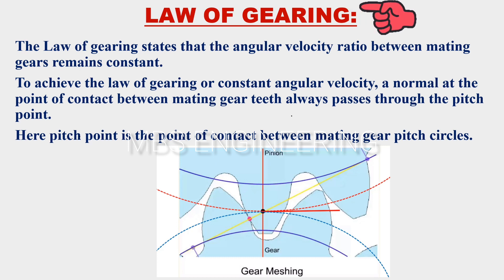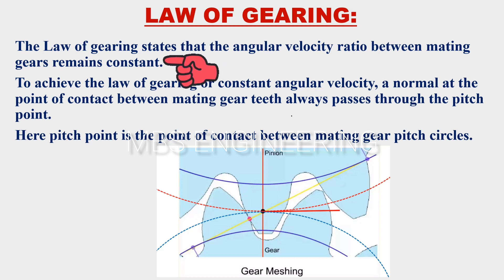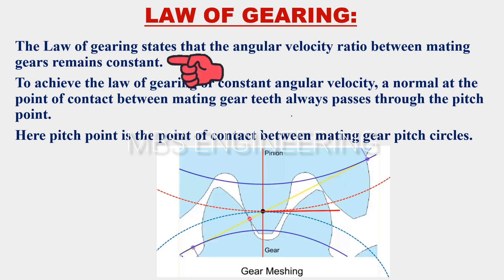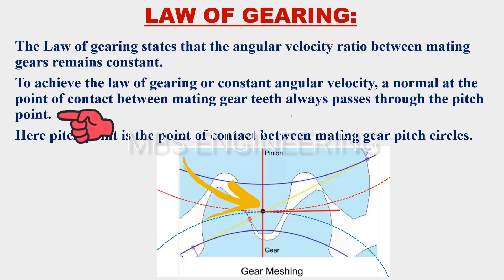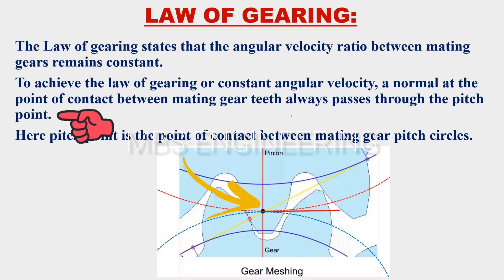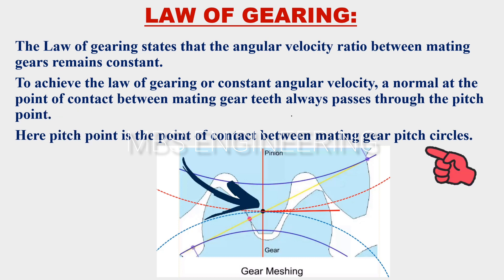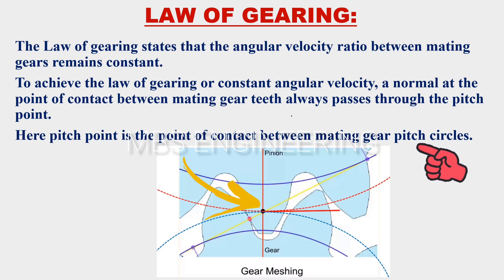The law of gearing states that the angular velocity ratio between mating gears remains constant. To achieve the law of gearing or constant angular velocity, a normal at the point of contact between mating gear teeth always passes through the pitch point. The pitch point is the point of contact between mating gear pitch circles.